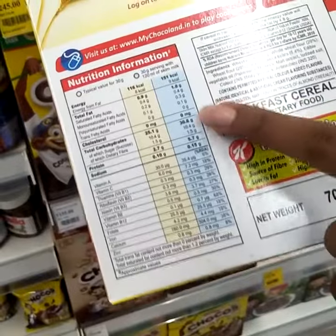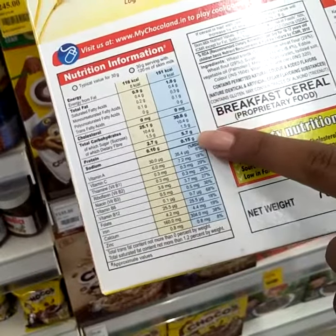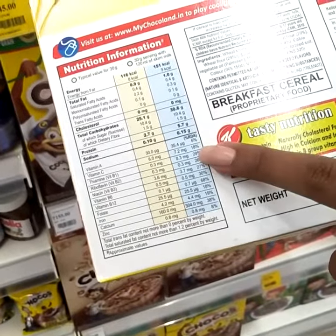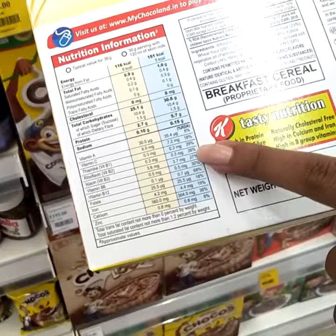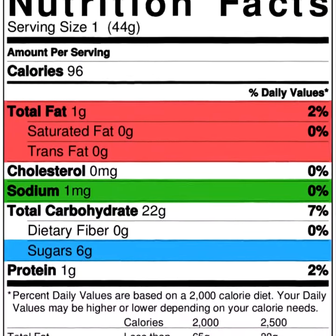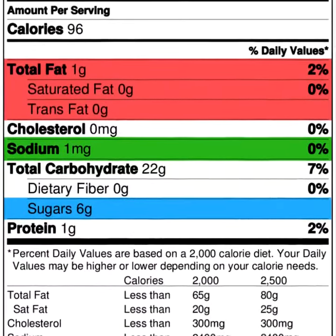Nutritional Information. In the per 100 grams column or per portion, look for the four main high-risk ingredients: total fat, saturated fat, sugar, and salt.